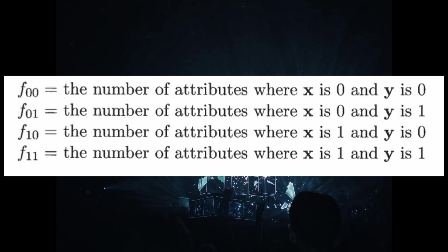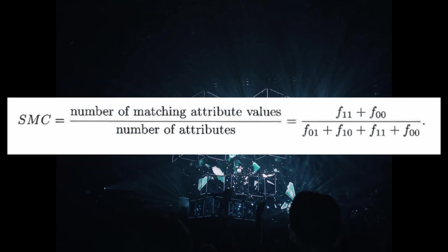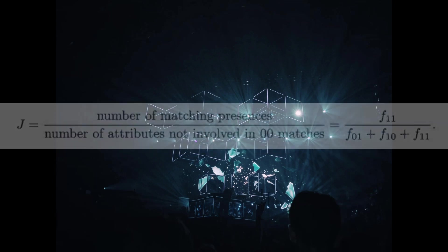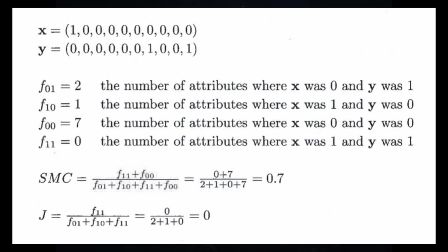Using these similarity coefficients, you can calculate a similarity matrix. The first metric is the Simple Matching Coefficient (SMC): the number of matching attribute values divided by the total number of attributes, i.e., (f11 + f00) divided by the total. The second metric is the Jaccard coefficient: the number of matching presences — where presence means attribute value is one, zeros are not counted — divided by the number of attributes not involved in non-presence matches.